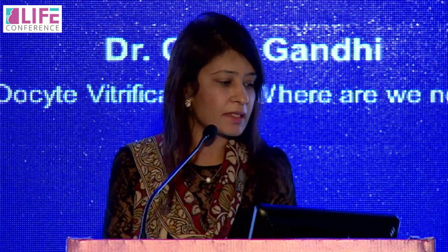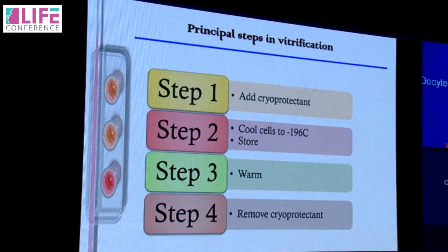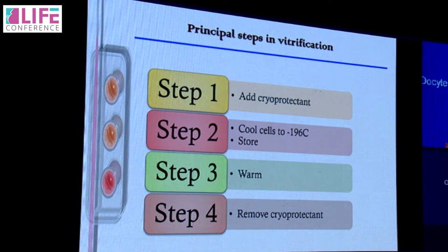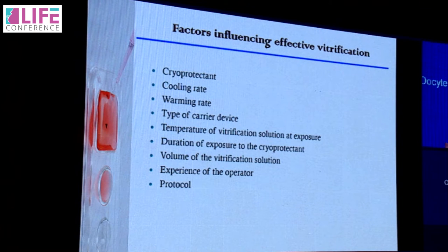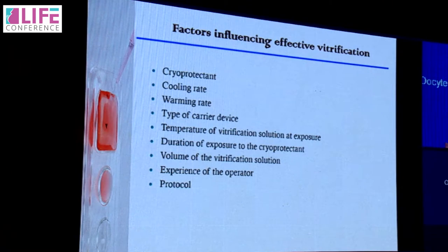The principal steps in vitrification are: adding the cryoprotectant, cooling cells to minus 196 degrees centigrade, warming the cells, and finally removing the cryoprotectants. Many factors affect successful vitrification, including: cryoprotectants, cooling rates, warming rates, type of carrier device used, temperature of vitrification solution and exposure, duration of exposure to cryoprotectants, volume of vitrification solution, and the experience of the operator and the protocol used.